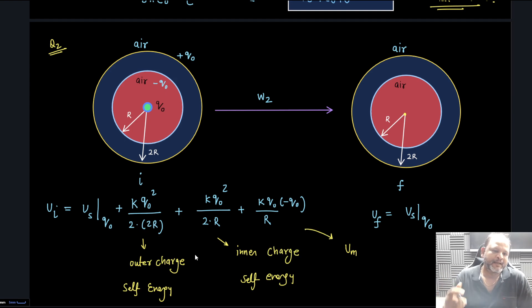Directly I can say whatever it is going to be it is self energy of that charge q naught. Final energy I can write self energy of charge q naught which is not known to us, which is not defined. Now when I write energy of the system, this is where mistake happens normally.